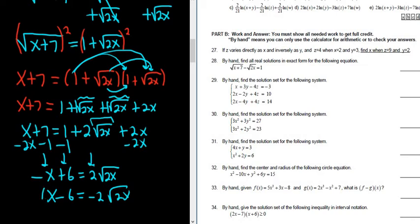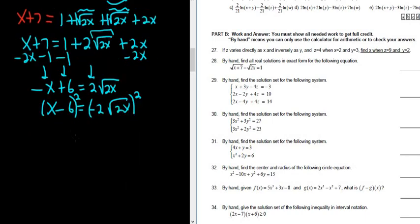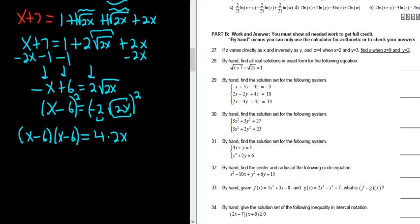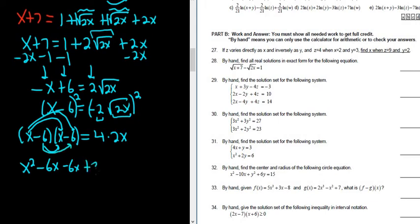Now we square both sides. We can write x minus 6 squared as x minus 6 times x minus 6. On the right, we square each piece: negative 2 squared is 4, and square root of 2x squared is 2x, giving 4 times 2x which is 8x. Expanding the left: x times x is x squared, x times negative 6 is negative 6x, the inside term is also negative 6x, and negative 6 times negative 6 is 36.